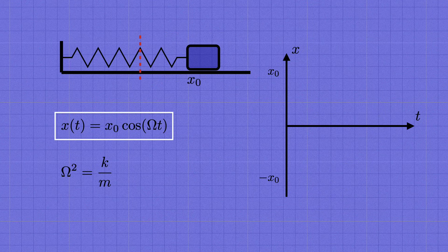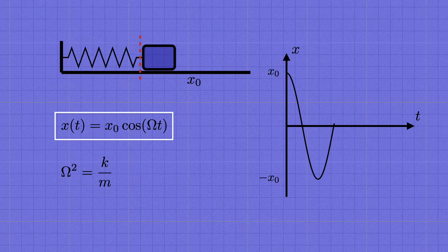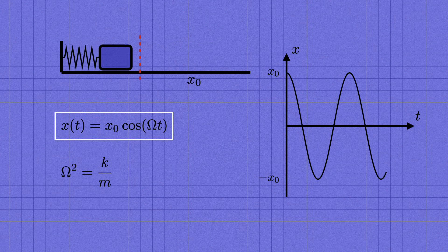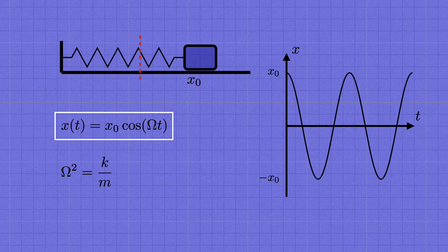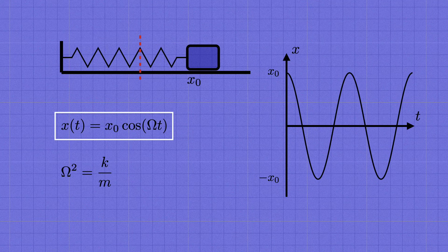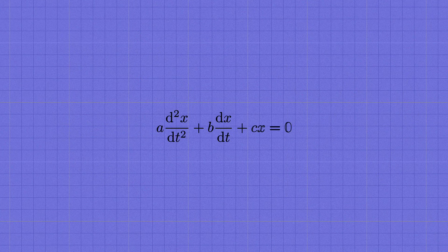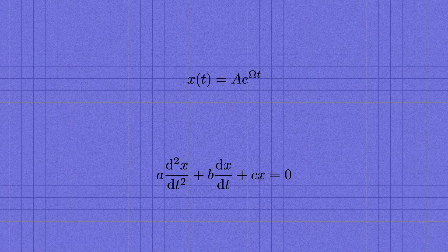This looks about like we'd expect: the block starts out at rest at the initial displacement x sub zero, and then oscillates back and forth around equilibrium, where omega controls how fast it oscillates. We've solved the differential equation together with the initial conditions by substituting in a guess — an ansatz — with some constants in it, and seeing how to pick the constants to get a solution. This kind of strategy works in general for a linear equation like this, where in general you'd pick an exponential for your guess, a e to the omega t, substitute it in, and see what conditions come out on those constants.